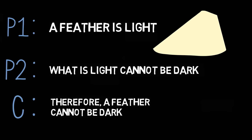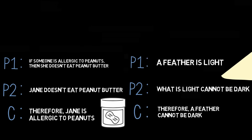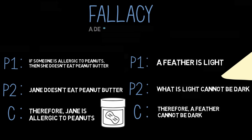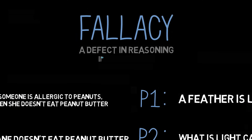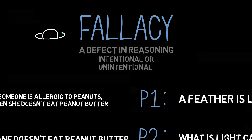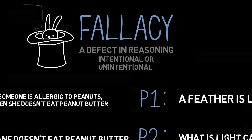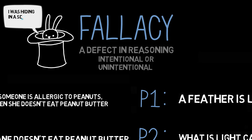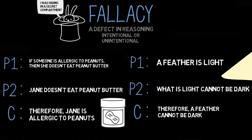These arguments probably seemed a bit off to you, and you're right. Each argument contains a fallacy, though each has a different kind. A fallacy, as we've seen in other Wireless Philosophy videos, is a defect in reasoning. This defect can be unintentional or intentional — I could simply make a mistake in my reasoning, or I could want to trick you into believing something by using deceptive reasoning.